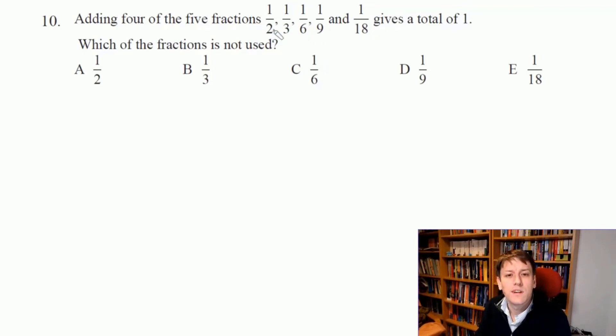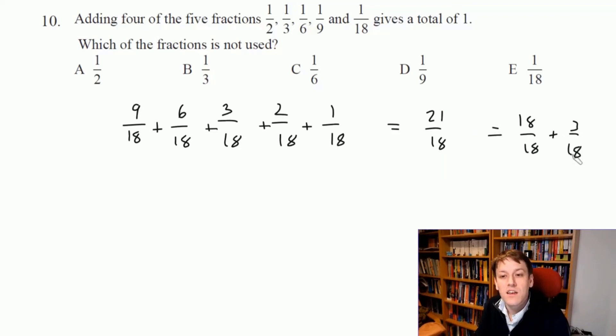We can put them over 18: a half is nine eighteenths, a third is six eighteenths, a sixth is three eighteenths, a ninth is two eighteenths, and one eighteenth is just one eighteenth. If I add all of these together I get nine plus six plus three plus two plus one, that's twenty one. So that's three eighteenths more than one, because one would be eighteen eighteenths. So it must be three eighteenths that's not included, and three eighteenths corresponded to one sixth. So the answer is C, one sixth.